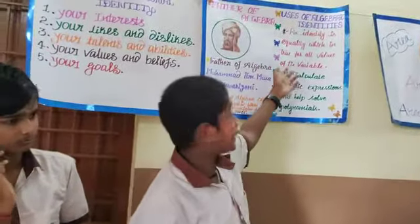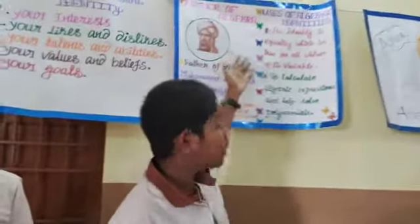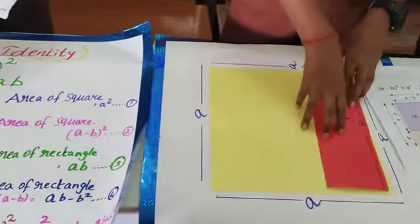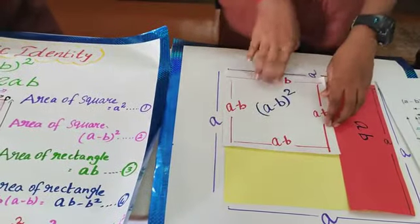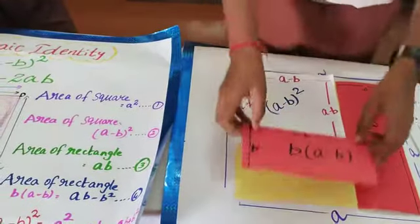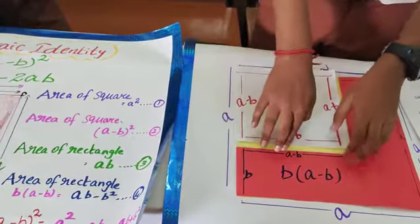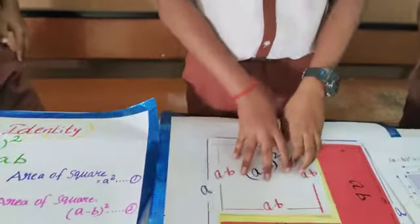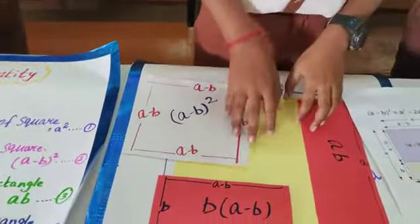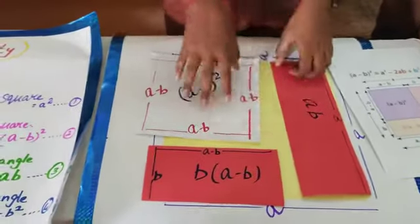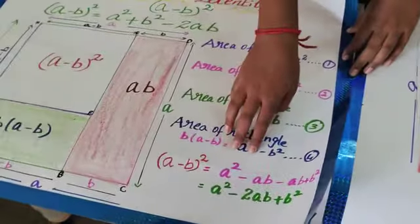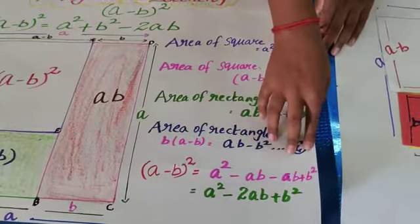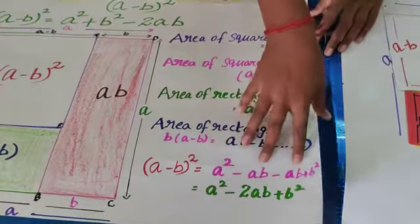This is a square with a side of A. I separated this with a rectangle with a side A into B. This is another square with a side A minus B, and also a rectangle with a side B into A minus B. Now I want to prove A minus B whole square. This is A square. This rectangle is A into B. A minus B whole square equals A square minus AB minus AB plus B square, which is equal to A square minus 2AB plus B square.